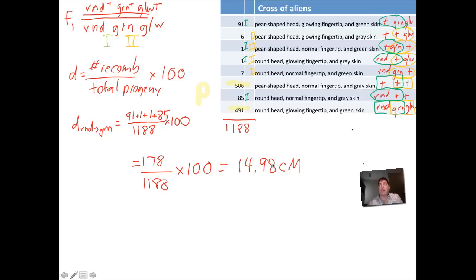And here's another locus, this is region two. Everywhere there's a two we're going to put the number down: 6 to 1 to 1 to 7. You add those up and divide by 1188, multiplied by 100, and you're going to come up with about 1.26 centimorgans of distance.